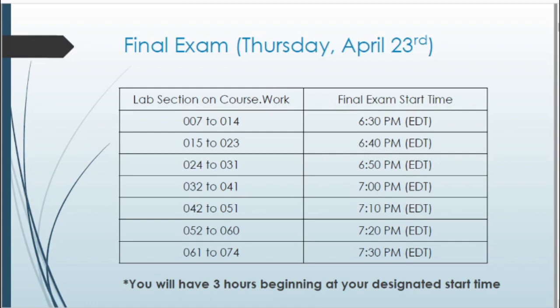Whatever lab section you're in will tell you what time your exam starts. For example, if you're in lab sections anywhere between 7 and 14, your final exam start time will be at 6:30 Eastern Daylight Time. If you don't know exactly what your lab section is, you can look on Wolverine Access or go to the stats Canvas page and go to your former GSI's resources page. Start times range from as early as 6:30 to as late as 7:30 p.m.